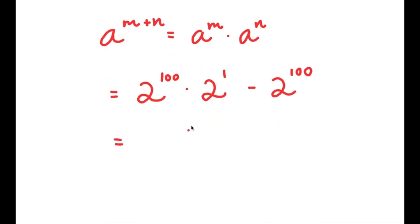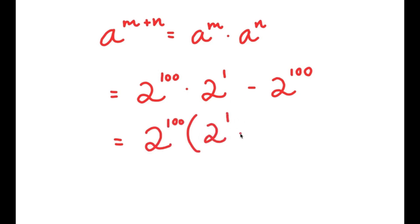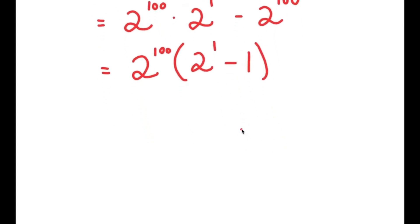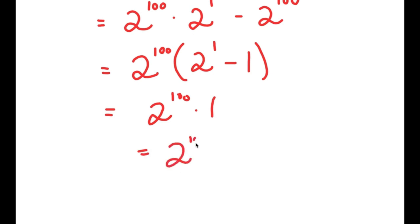From here I can factor out 2 to the power of 100, so I get 2 to the power of 100 times 2 to the power of 1 minus 1. Now 2 to the power of 1 is equal to 2, and 2 minus 1 is 1, so I'm left with 2 to the power of 100 times 1, which is equal to 2 to the power of 100.